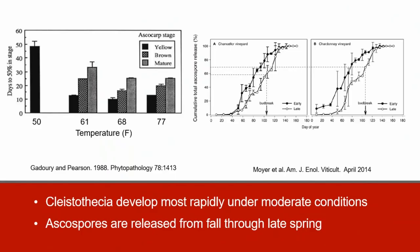Kleistothesia produce ascospores inside asci, and the ascospores are discharged from fall to late spring depending on the temperature and the amount of precipitation. Kleistothesia mature most rapidly at moderate temperatures, and mature Kleistothesia can discharge ascospores from fall through late spring. The graph on the left shows that maturation occurs most rapidly at temperatures between 68 and 77 degrees Fahrenheit and that at 50 degrees Fahrenheit they remain in the immature stage.